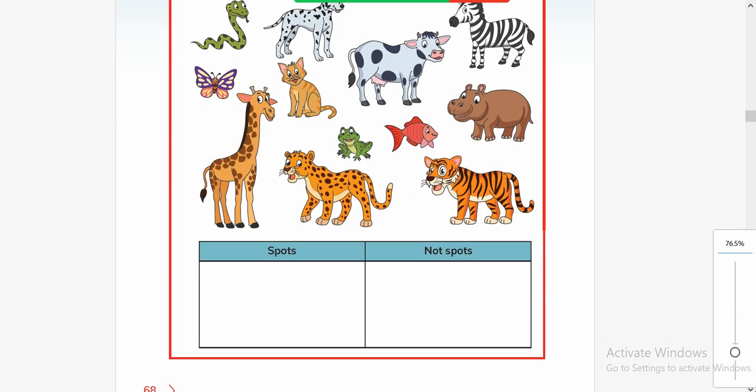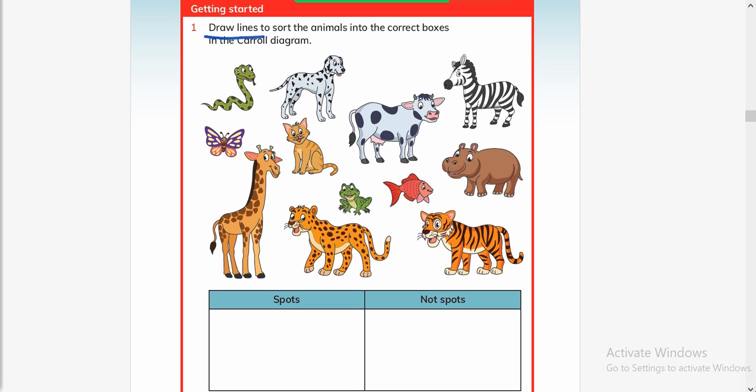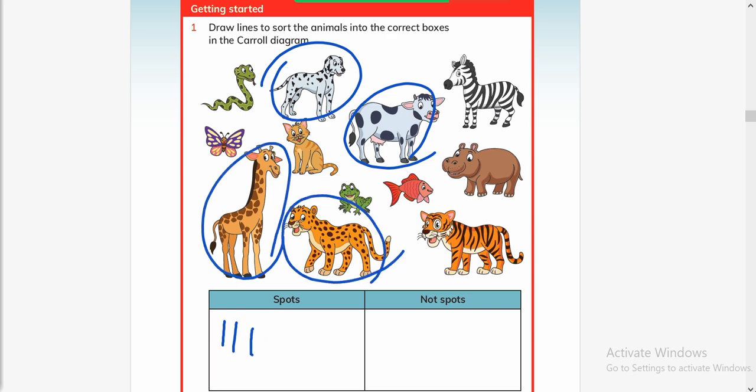Draw lines to sort the animals into the correct boxes. Okay, first it is written here 'spots'. This animal has spots, and this animal has spots, this animal has spots, this animal has spots. These are tally marks. And what other? Ah yes, snake also has spots. Okay, five. So five animals have spots.